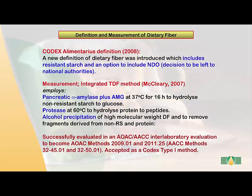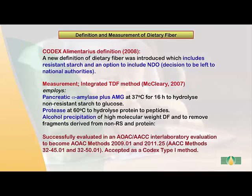In 2008, the Codex Alimentarius introduced a new definition of dietary fiber which includes resistant starch, and an option to include non-digestible oligosaccharides, the decision left to national authorities. A method developed to service this definition was published by myself in 2007. It employs pancreatic alpha-amylase plus amyloglucosidase at 37 degrees for 16 hours to hydrolyze non-resistant starch to glucose, protease at 60 degrees centigrade to hydrolyze protein to peptides, and alcohol precipitation to separate high molecular weight material from hydrolyzed fragments.